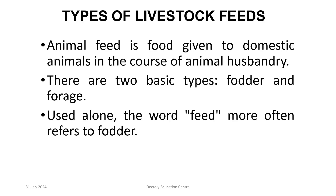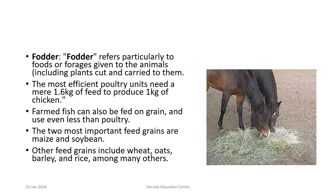Types of livestock feeds: animal feed is food given to domestic animals in the course of animal husbandry. There are two basic types — fodder and forage. Fodder refers particularly to foods or forages given to the animals, including plants cut and carried to them.